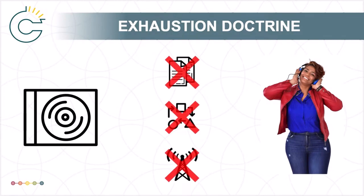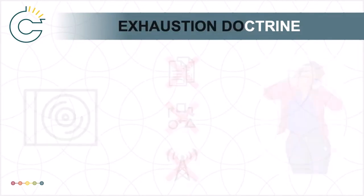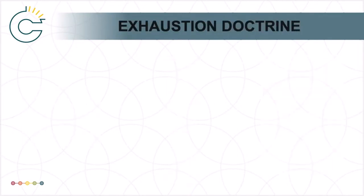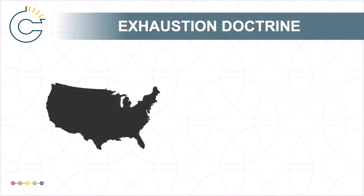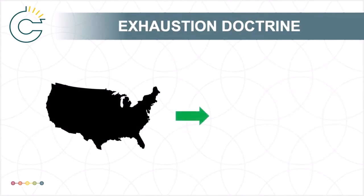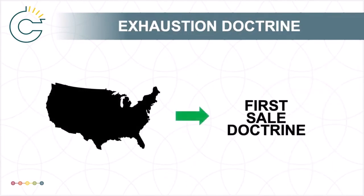Section 3.1(j) gets at what is called the exhaustion doctrine in Canadian copyright, but you might know it by the similar U.S. concept, the first sale doctrine.